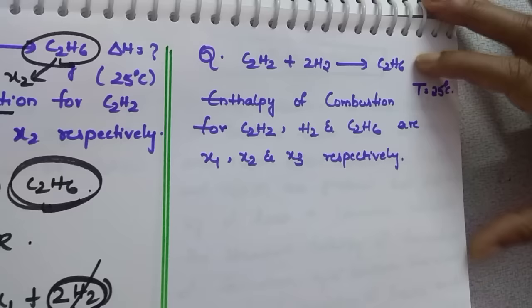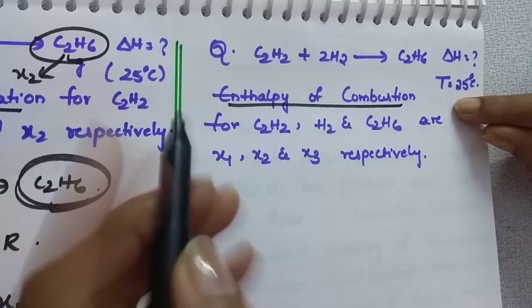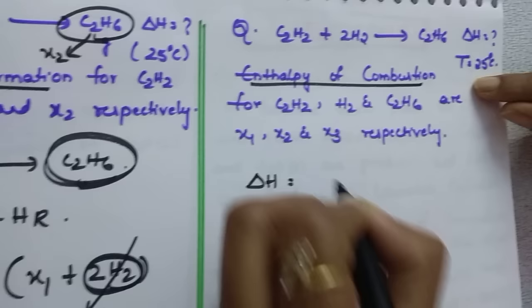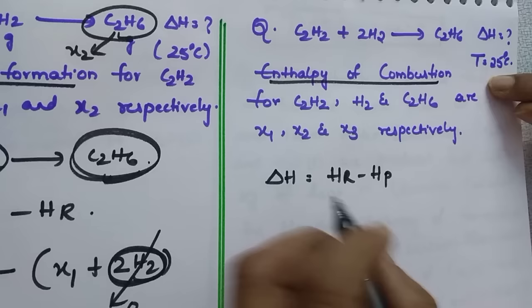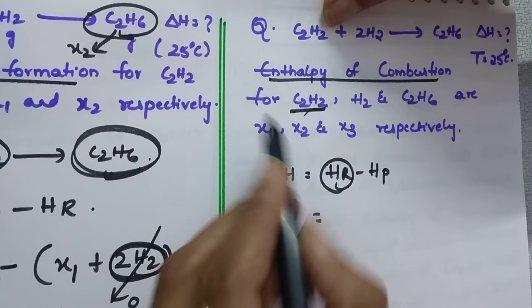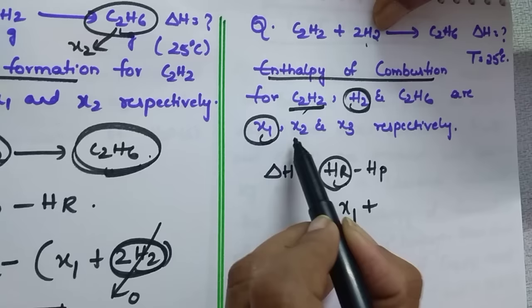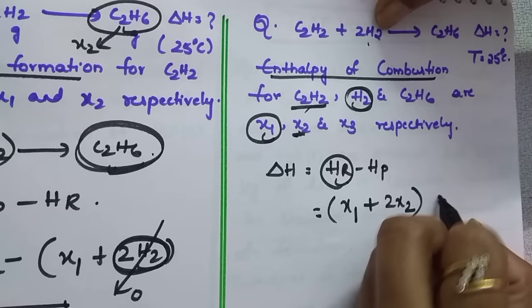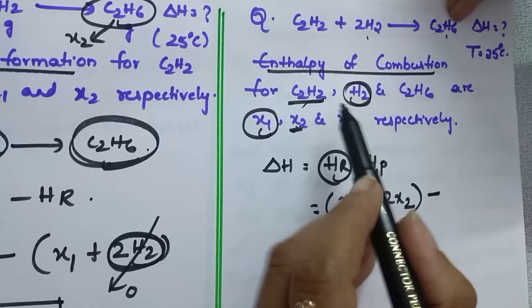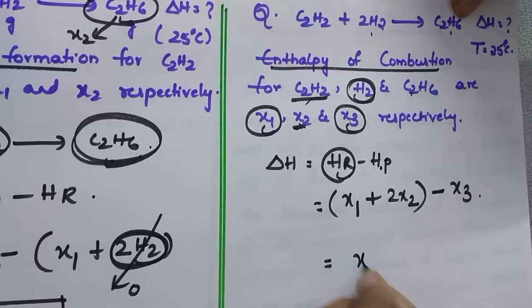Same reaction C₂H₂ + 2H₂ → C₂H₆, but now enthalpy of combustion data is given. Using combustion formula (reactants minus products): ΔH = enthalpy of combustion of C₂H₂ + 2 × enthalpy of combustion of H₂ − enthalpy of combustion of C₂H₆. With values x₁ for C₂H₂, x₂ for H₂, and x₃ for C₂H₆, the answer is x₁ + 2x₂ − x₃.